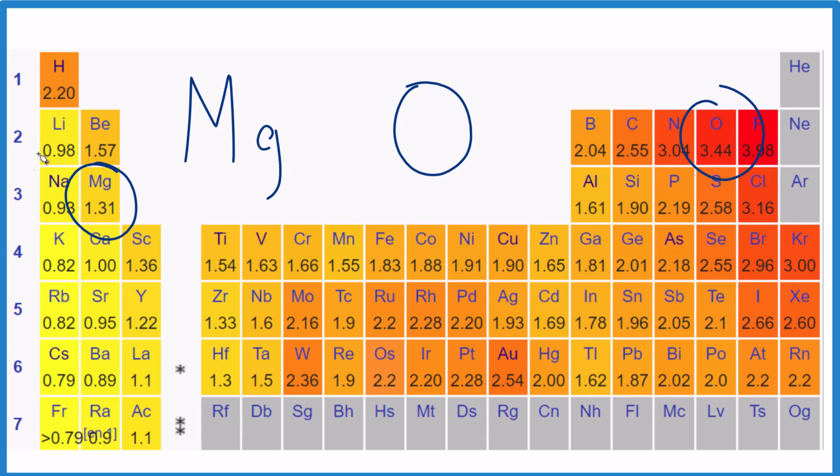This is a non-metal here, and we have a metal. Metals tend to be lower. The trend, as you go across, electronegativity increases, as you go up a group, it increases.